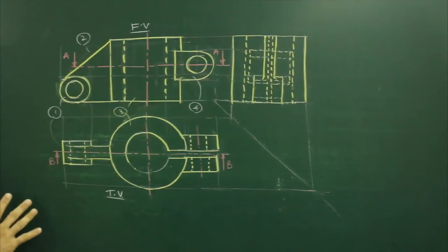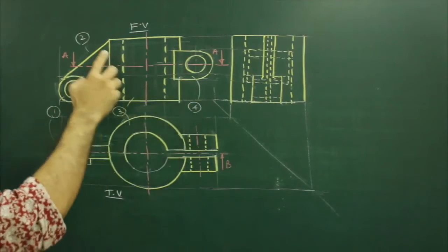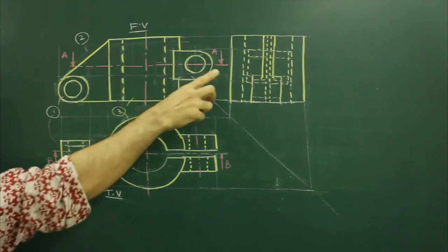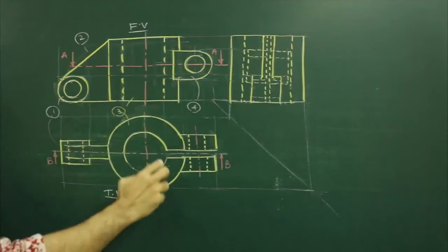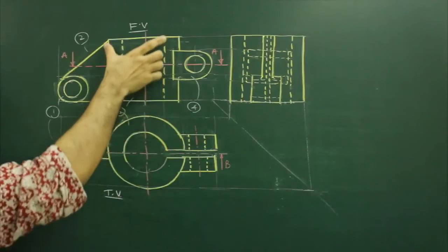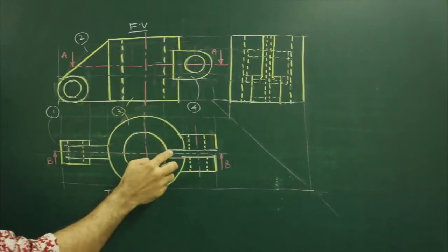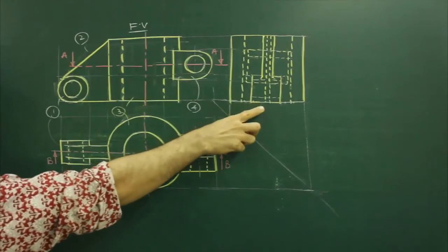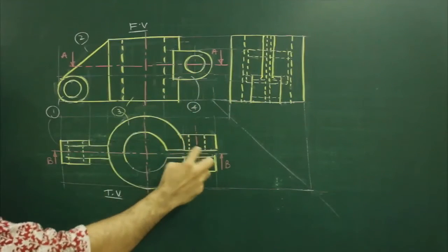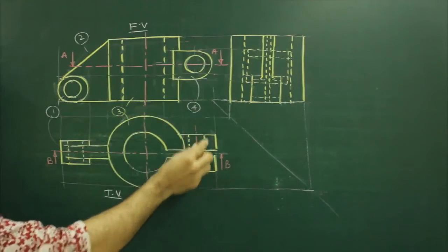So we are done with the side view. I will just brief once again. First part: circle, rectangle, rectangle. Second part: slope, rectangle, rectangle. Third part: circle, dotted line. So we have a rectangle with dotted line plus one more slot, so two extra dotted lines. And then we have a circle — rectangle, so we will have a rectangle. Again we have a circle where we have a dotted line, so in that also we will have a dotted line.